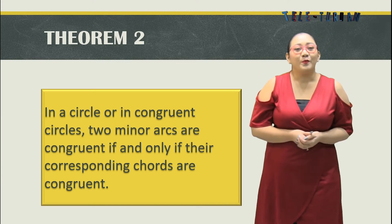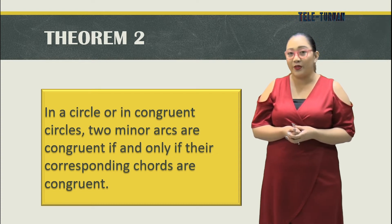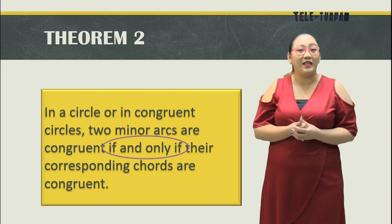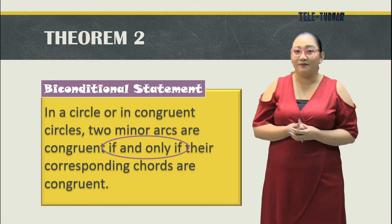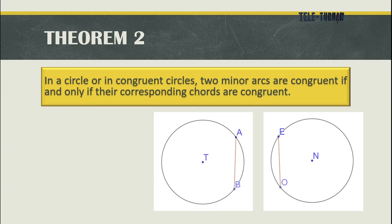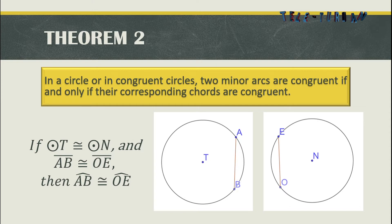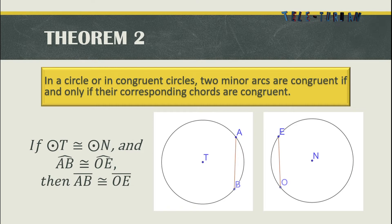Theorem number two: In a circle, or in congruent circles, two minor arcs are congruent if and only if their corresponding chords are congruent. This is also a bi-conditional statement. For circles T and N, given that the two circles are congruent and chord AB is congruent to chord OE, then arc AB and arc OE are congruent as well. Conversely, if arc AB and arc OE are congruent, then chord AB and chord OE are congruent.